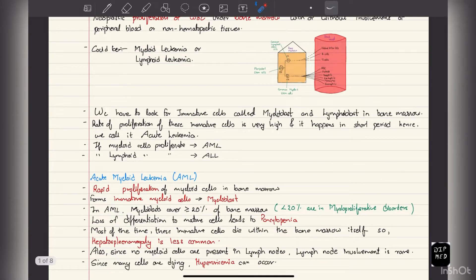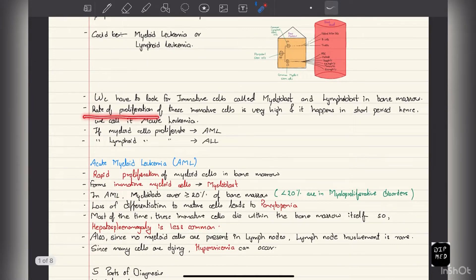In leukemia there is proliferation of immature cells. We have to look for immature cells. If it's myeloblast then it's myeloid leukemia, and if lymphoblast is present then it's lymphoid leukemia. The rate of proliferation of these immature cells is very high, and if it happens in a short period then it's called acute leukemia, which is today's topic.